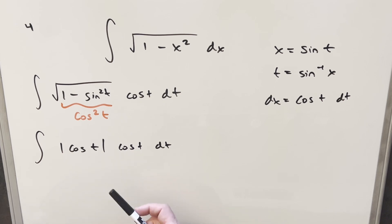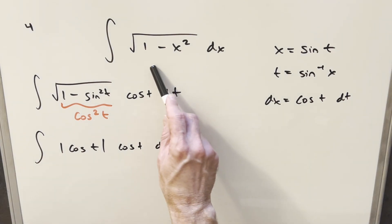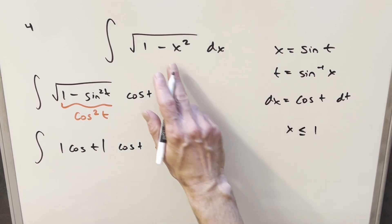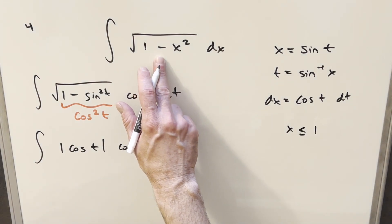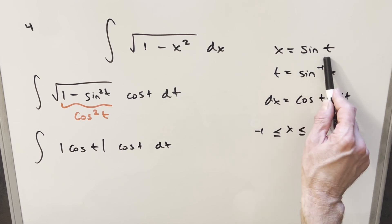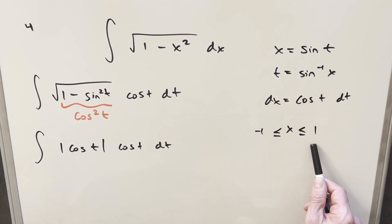Now with the absolute value, we could break this into two cases. What we want to do is look a little bit at the domain of this. Looking at our original problem, we can see that our x value needs to be less than or equal to 1 in order to keep what's inside the radical as a positive number, and then it also has to be greater than or equal to negative 1. And these bounds for x are actually fine because the whole range of sine is going to be actually just minus 1 to 1.